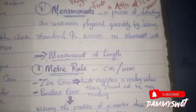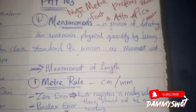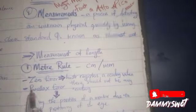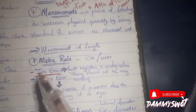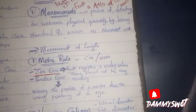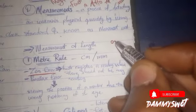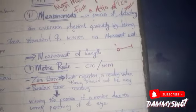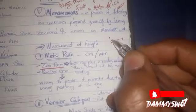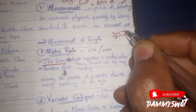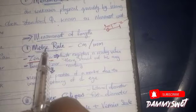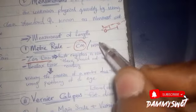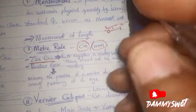In measurement we have the meter rule. A possible error that can occur with the meter rule is zero error — please take note of that. Some instruments read from zero onward. Your ruler starts from zero, then one, then two. Meter rules are measured basically in centimeters or in millimeters.